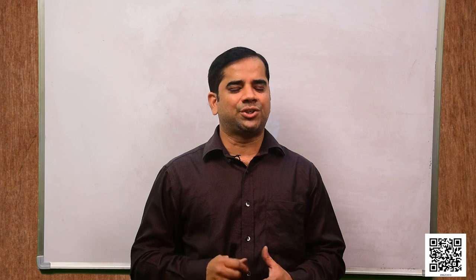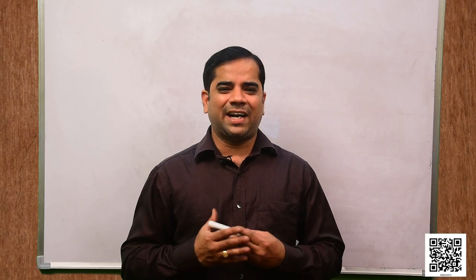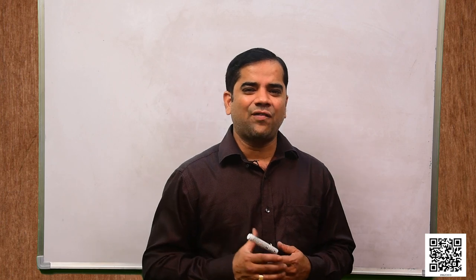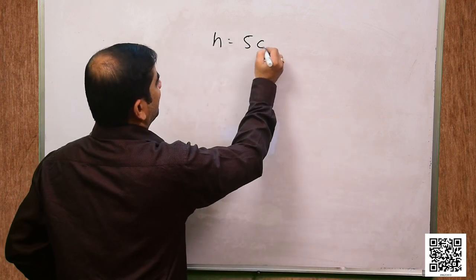Let us now discuss question number 4. If the lateral surface area of a cylinder is 94.2 cm² and its height is 5 cm, find the radius of its base and its volume. Use π = 3.14. The given data: height h = 5 cm, and let radius = R.